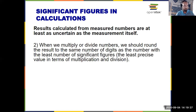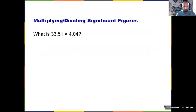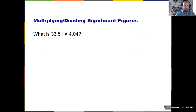Multiplication and division is different. You count the total number of significant figures in each number you're using, and whatever had the fewest total sig figs going in, that's how many sig figs you use for the final answer. For example, 33.51 times 4.04 — the calculator gives 135.3804. But 33.51 had four sig figs and 4.04 had three, so the final answer should have three sig figs: 135.